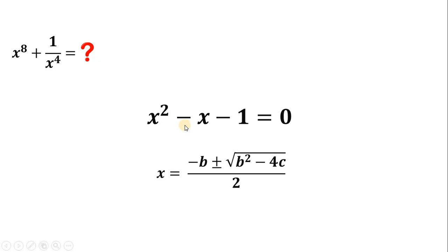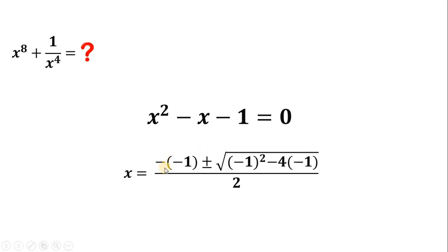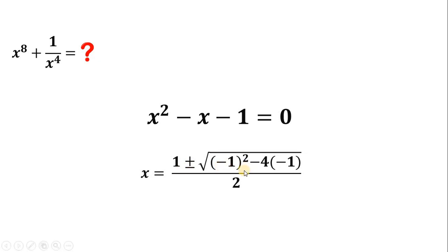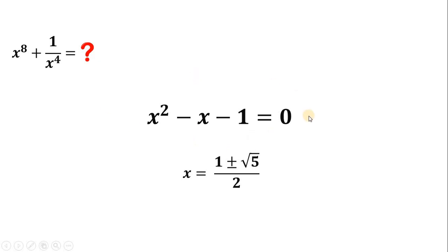Next, b is the coefficient of x, which is negative 1, so we can replace all b with negative 1. And the value of c is the constant, which is also negative 1. Let's simplify: negative times negative 1 is positive 1; negative 1 squared is 1; negative 4 times negative 1 is positive 4; and 1 plus 4 gives us 5. Therefore, the value of x is 1 plus or minus square root of 5, over 2 — simply the golden ratio.